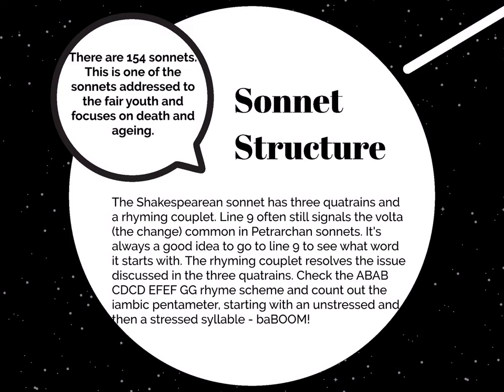It's in the Shakespearean sonnet form. The Shakespearean sonnet has three quatrains and a rhyming couplet. Like the Petrarchan sonnet, the change often begins on line 9, and the Petrarchan sonnet calls this the Volta. The Petrarchan sonnet form also has 14 lines, but it's broken up into an octave and a sestet, so the sestet begins on line 9, and that's where the change is often seen.